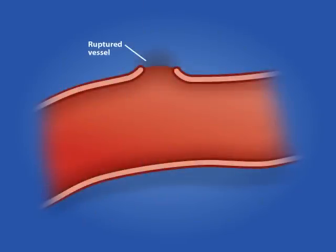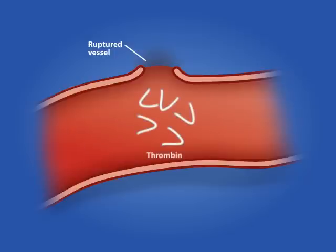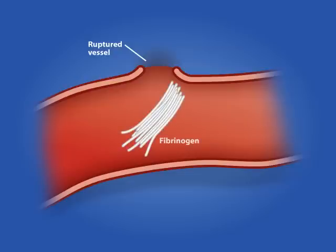The body continues its repair of the injured vessel through the process of coagulation. Coagulation is the formation of a fibrin clot by margination of new platelets along the vessel wall.